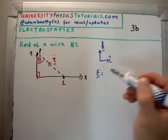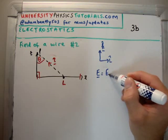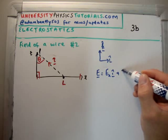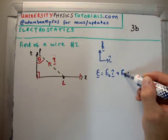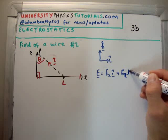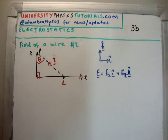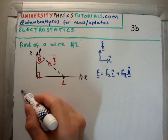So as we said previously, we can break this down into E sub x in the i-hat direction and E sub z in the k-hat direction. Alright, so we're going to have two components here. If we look in the x direction...